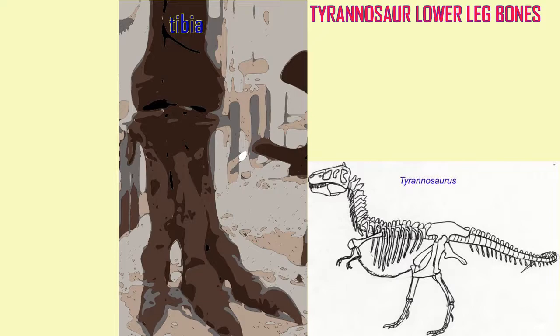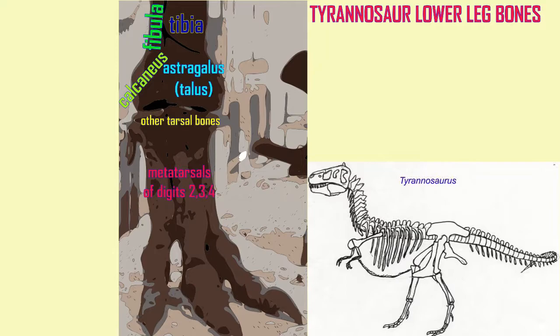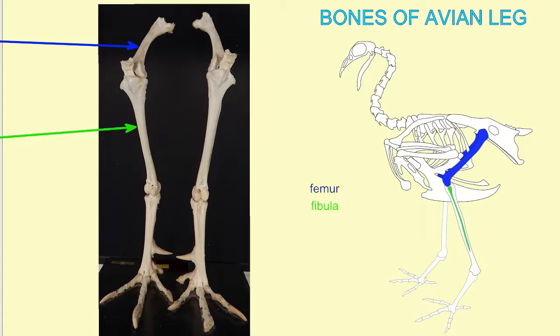In Tyrannosaurus, one can observe that these two tarsal bones have fused to the tibia and the fibula in the lower leg, although one can still observe the sutures where the bones meet.